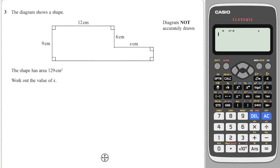This is a compound shape, so I will start by splitting it into two rectangles as such. I can see here that this rectangle over here is 9 times 12, which is 108.